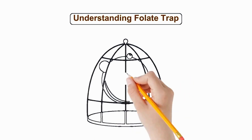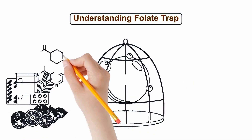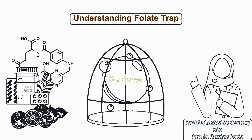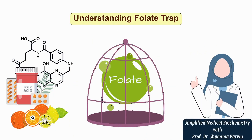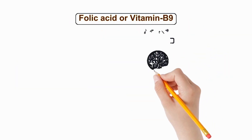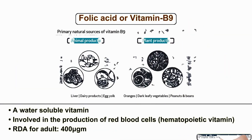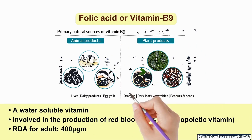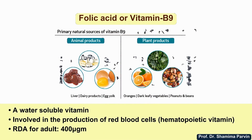Hello and welcome to simplified medical biochemistry. This video is a basic explanation of the folic trap. Folic acid, or vitamin B9, is a water-soluble vitamin and since it's involved in the production of red blood cells — that is hematopoiesis — it is one of the hematopoietic vitamins.